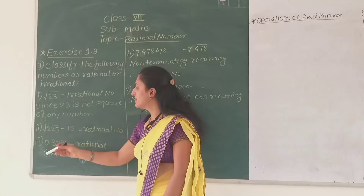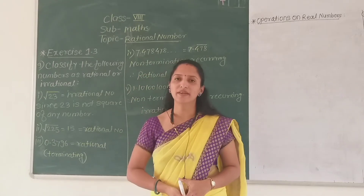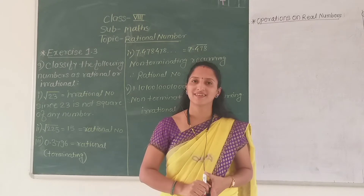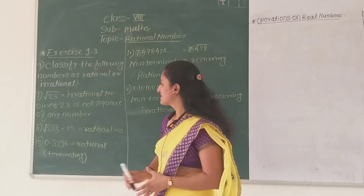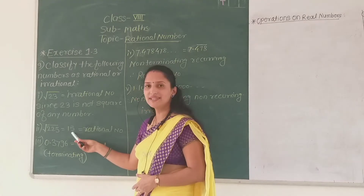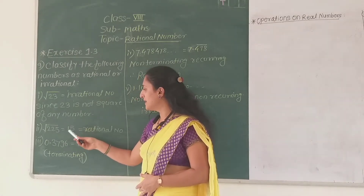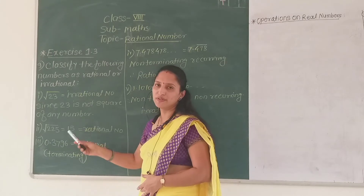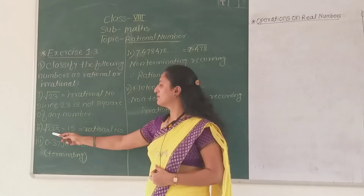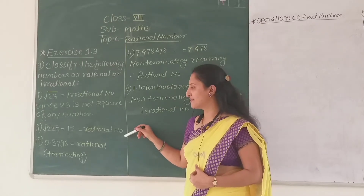Now the second example is square root of 225. What is the square root of 225? Square root of 225 is 15. And 15 is a rational number, since we can write 15 in the form p over q, that is 15 over 1. So square root of 225 is a rational number. It is quite simple.